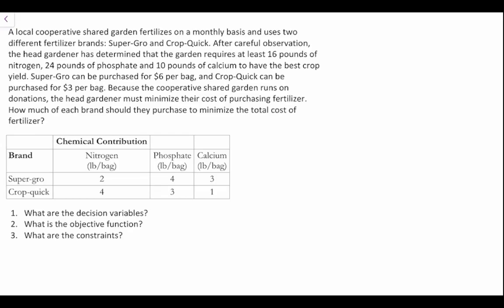Super Grow can be purchased for $6 a bag and Crop Quick can be purchased for $3 a bag. Because the cooperative shared garden runs on donations, the head gardener must minimize their cost of purchasing fertilizer. How much of each brand should they purchase to minimize the total cost of fertilizer?